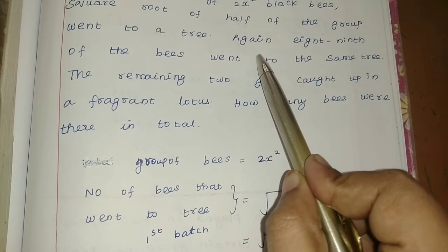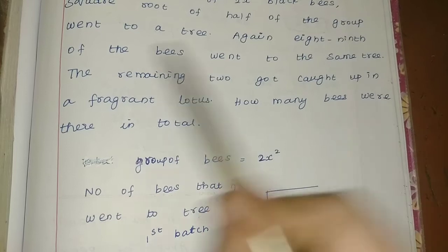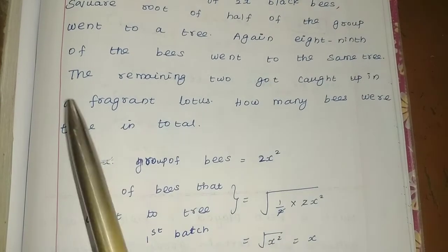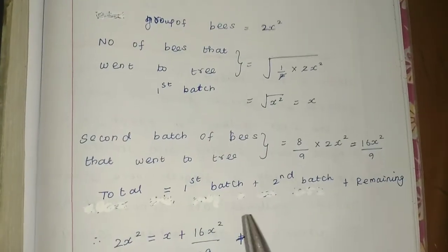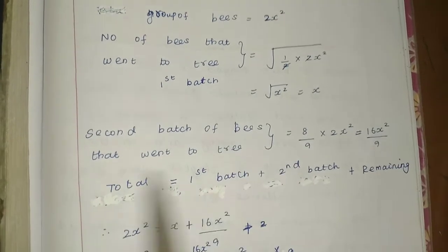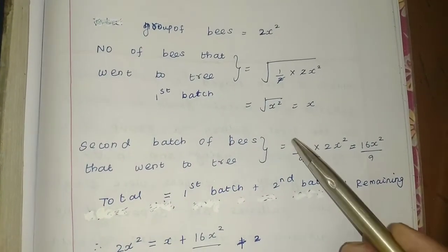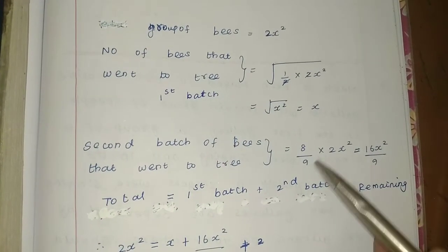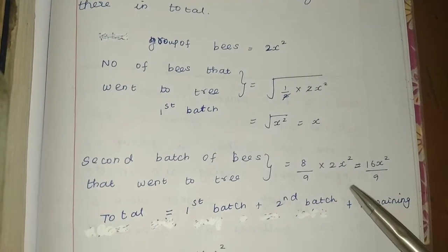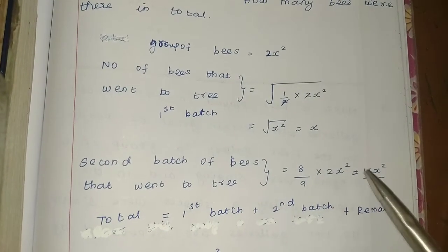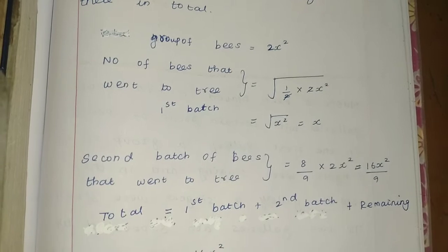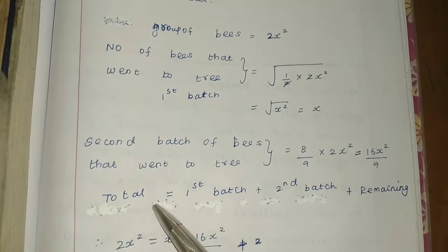Second batch: 8/9th of the bees went to the same tree. That is 8/9 of the total bees, 2x². So the 2nd batch is 16x²/9.